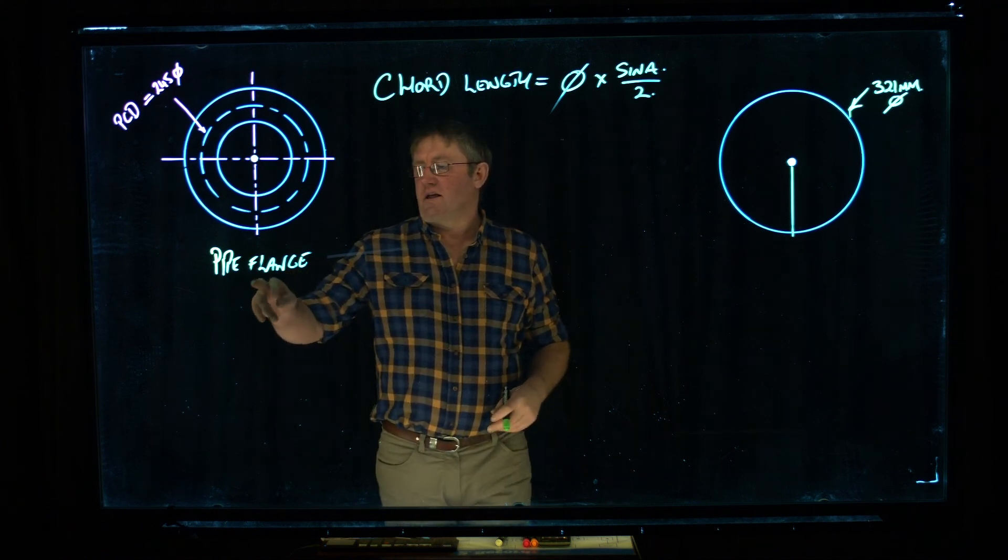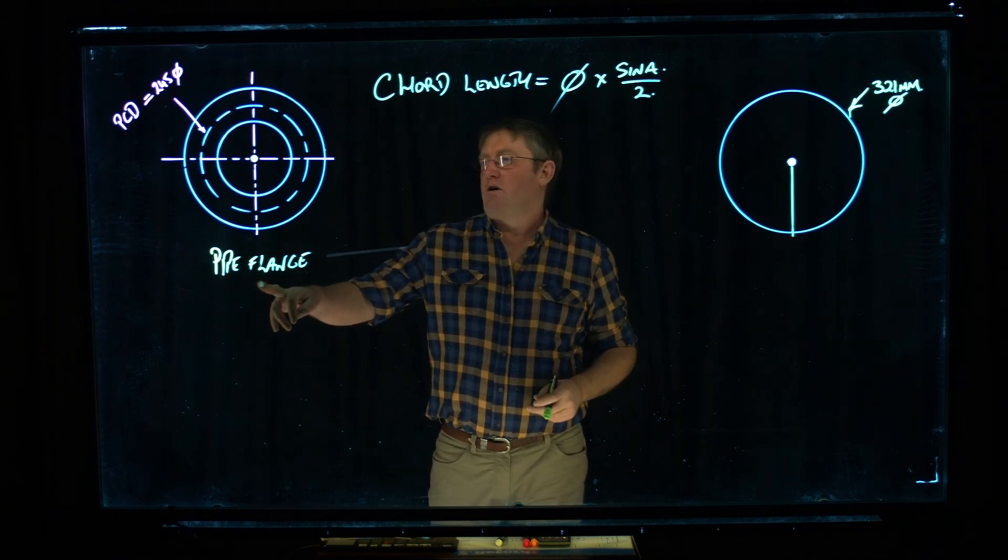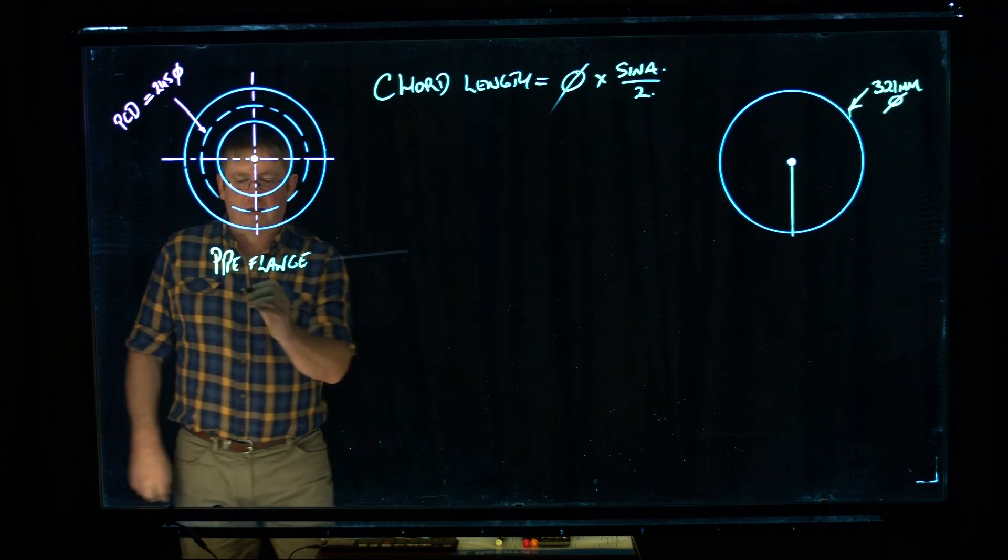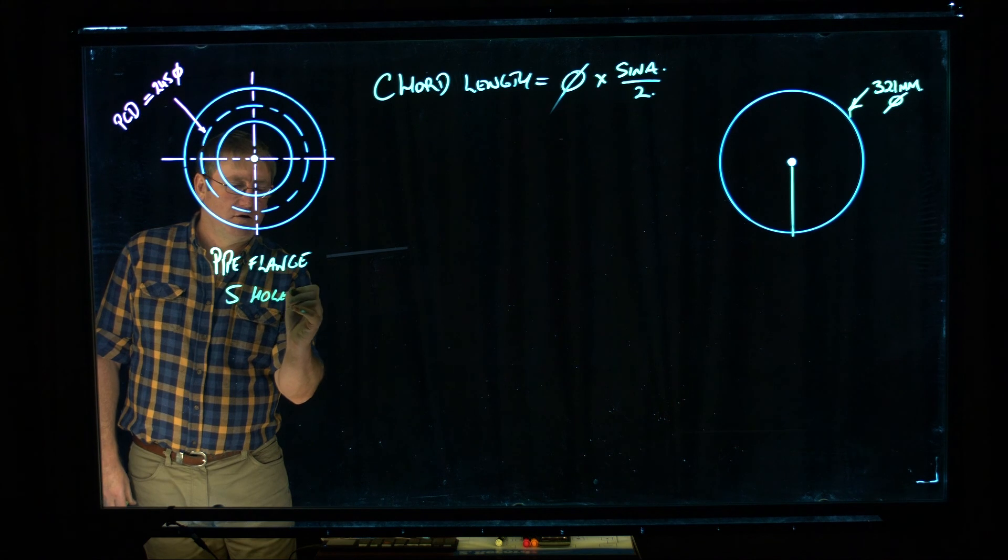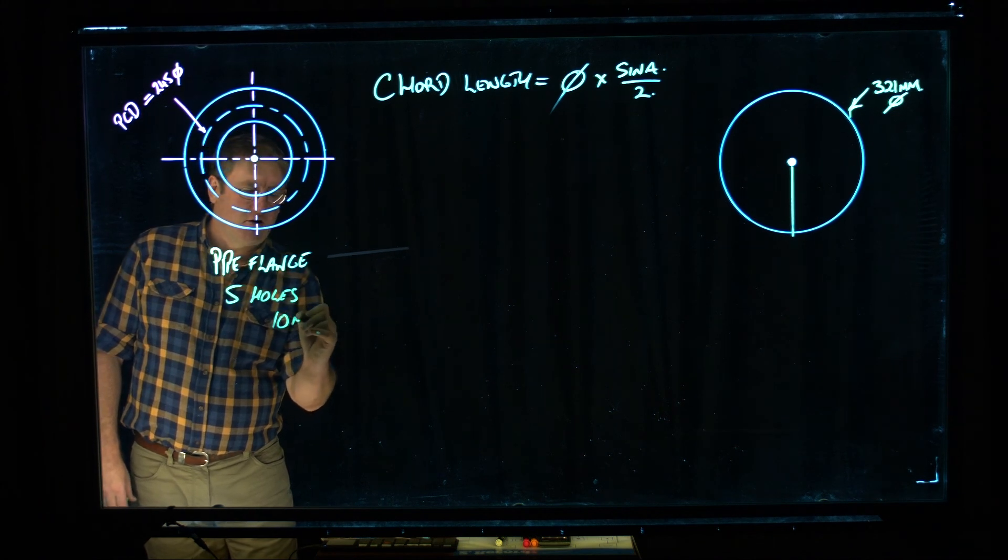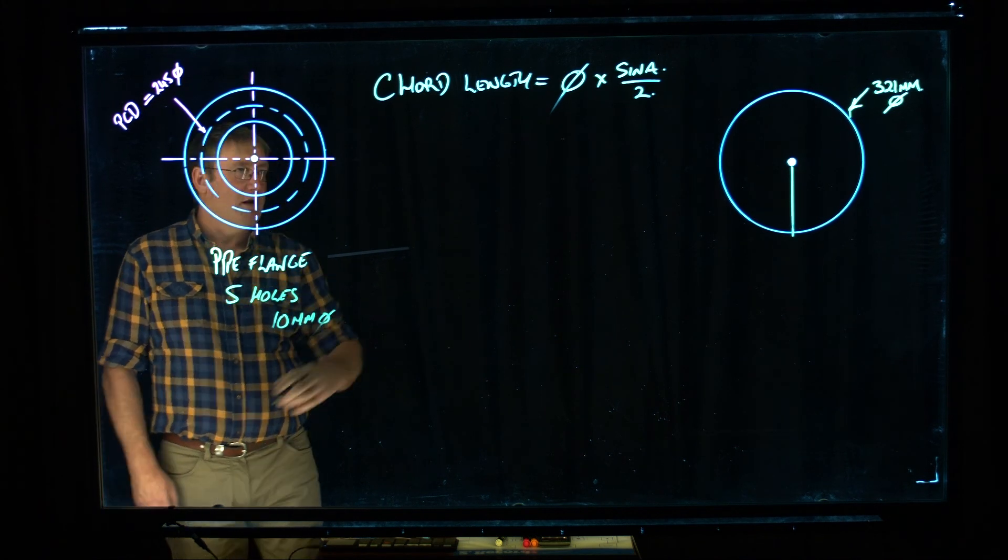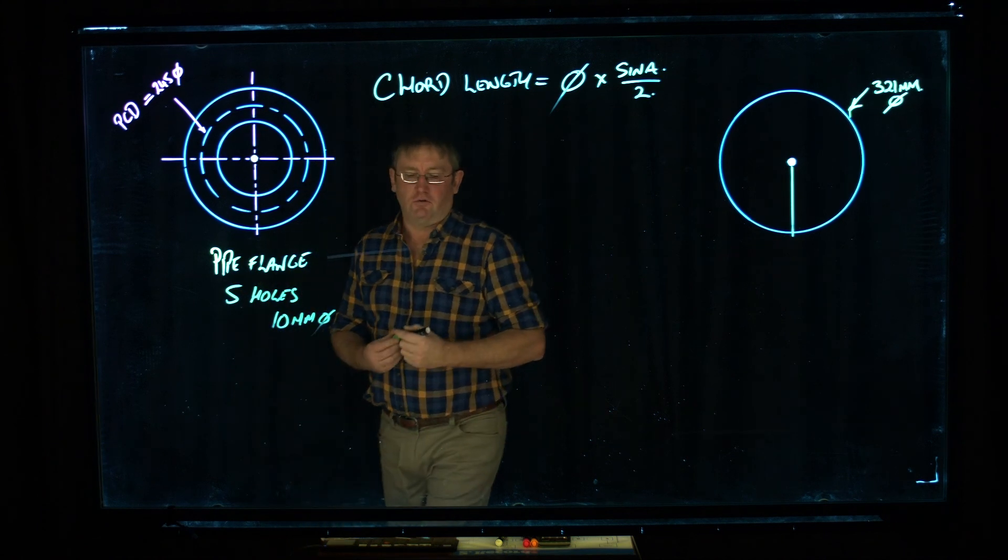So what I've got here, theoretically, is a pipe flange. And I want to put five 10mm holes in it. Five holes, 10mm diameter. And I'm going to use this formula here to do it.